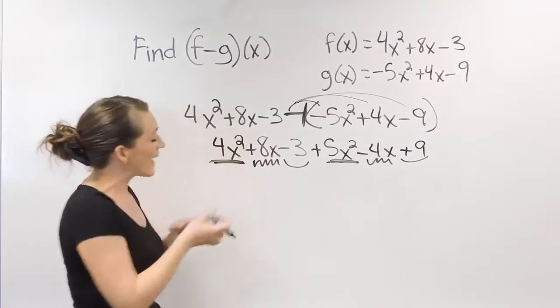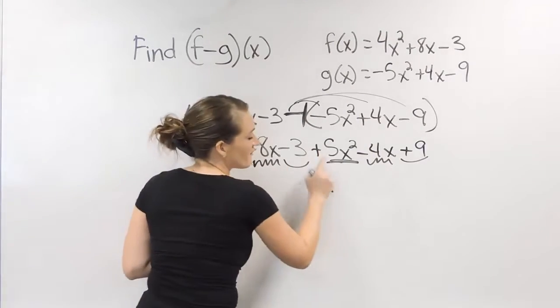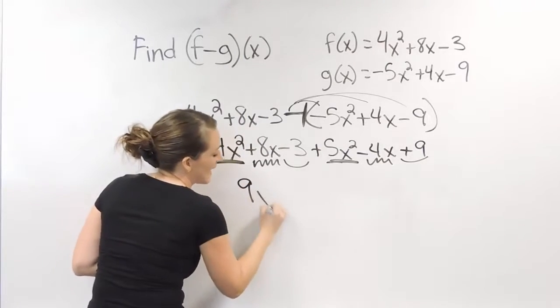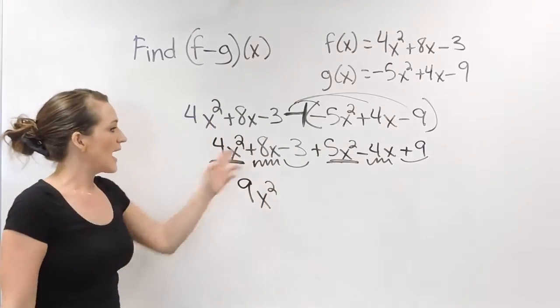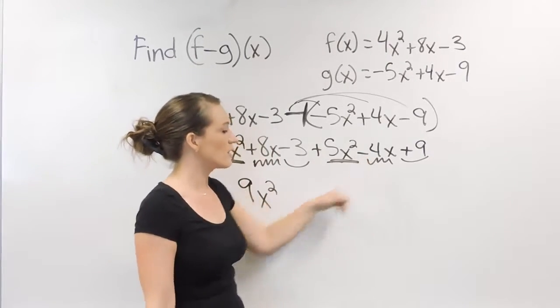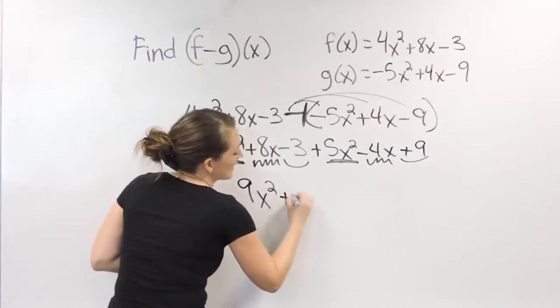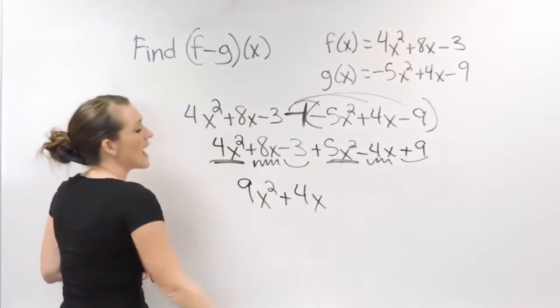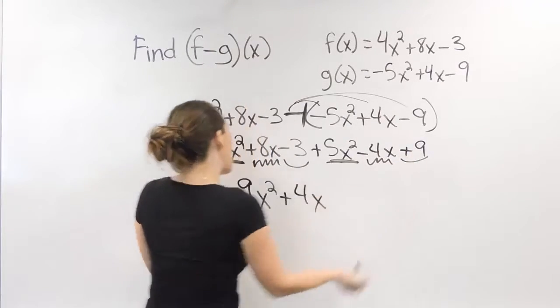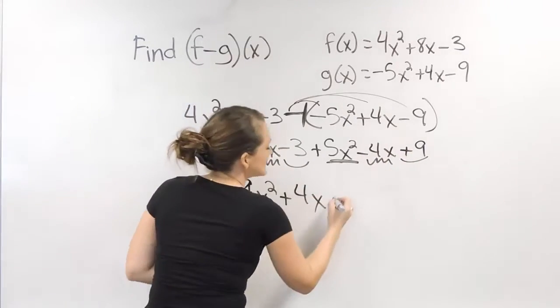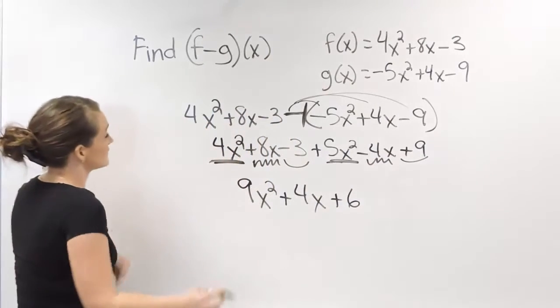So combine these together. 4x² plus 5x² gives us 9x². 8x plus negative 4 of them, same thing as saying 8x - 4x, that gives us 4x. And then a -3 plus 9, so -3 + 9 is a positive 6.